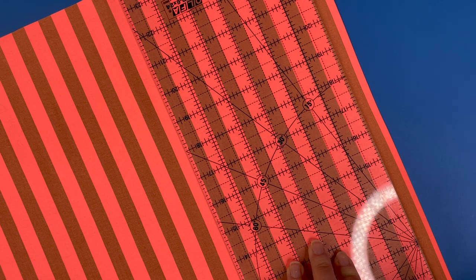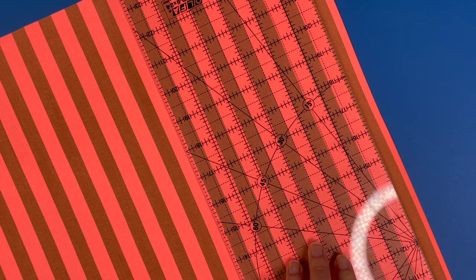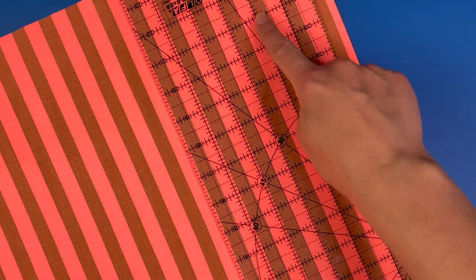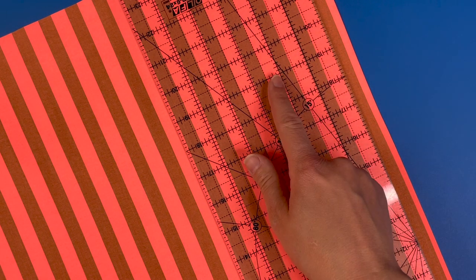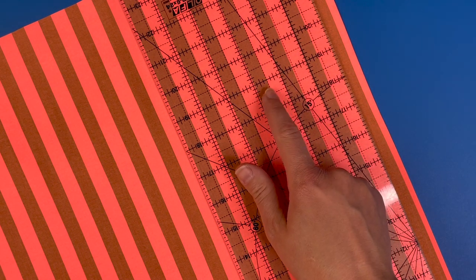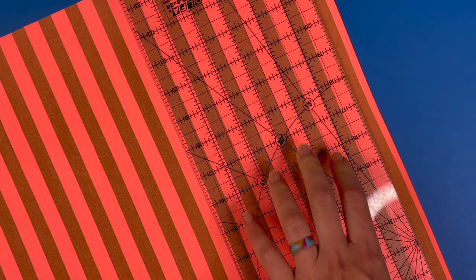The way that we're cutting it everything that we're talking about is going to end up in the seam allowance. So what we want to focus on is that we're straight and that our two inch and our two and a half inch are on either side of one neon line.